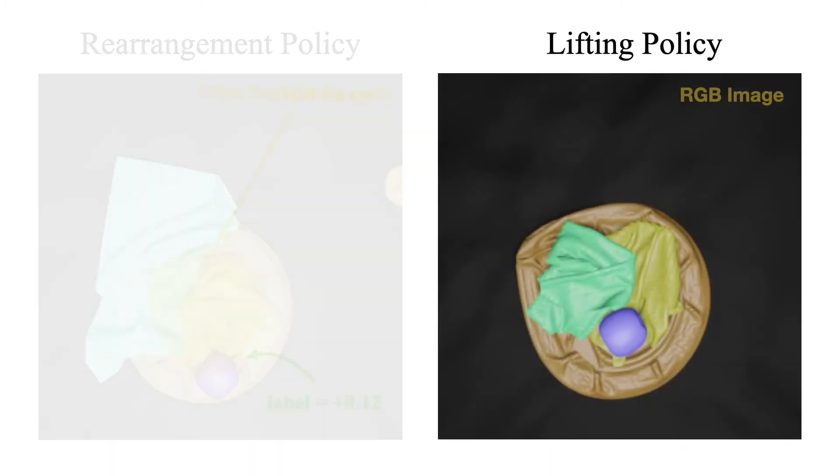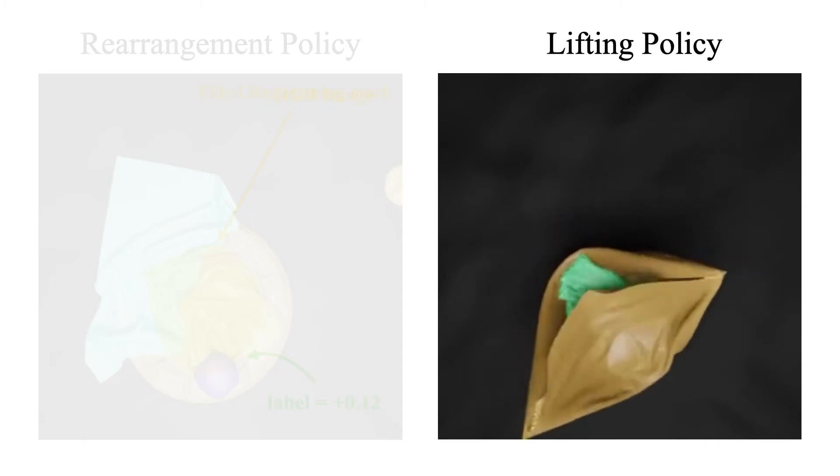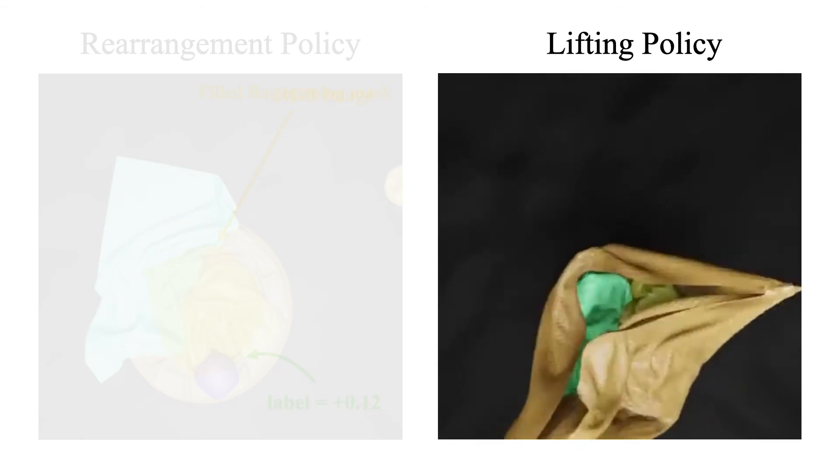The lifting policy is trained using spatial action maps as well and takes as input an RGB image and the boundary of the bag opening mask and outputs the lift actions. The label is set to 1 if all objects fall inside the bag and 0 otherwise.